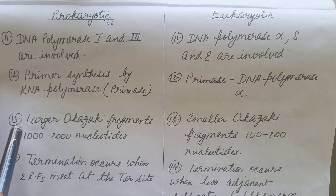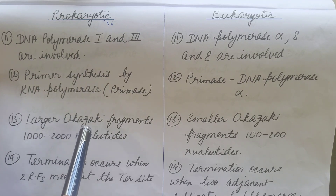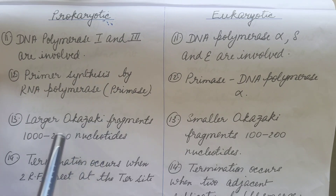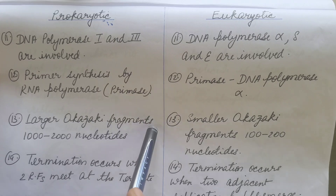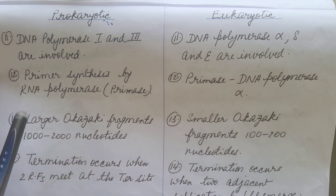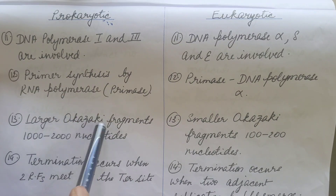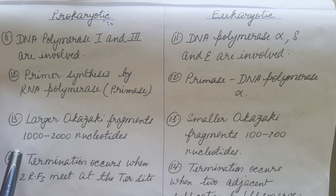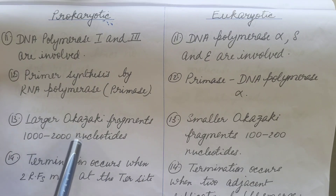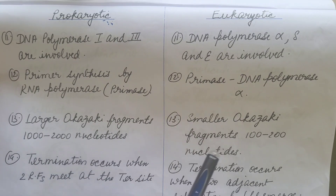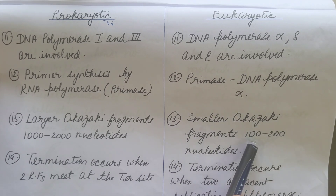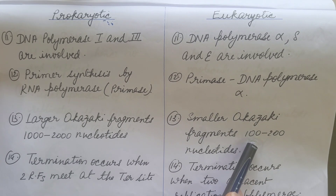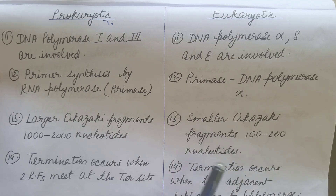The lagging strand in DNA replication is synthesized in the form of small fragments known as Okazaki fragments. In prokaryotic DNA replication, larger Okazaki fragments are produced, which are about 100 to 200 nucleotides long.